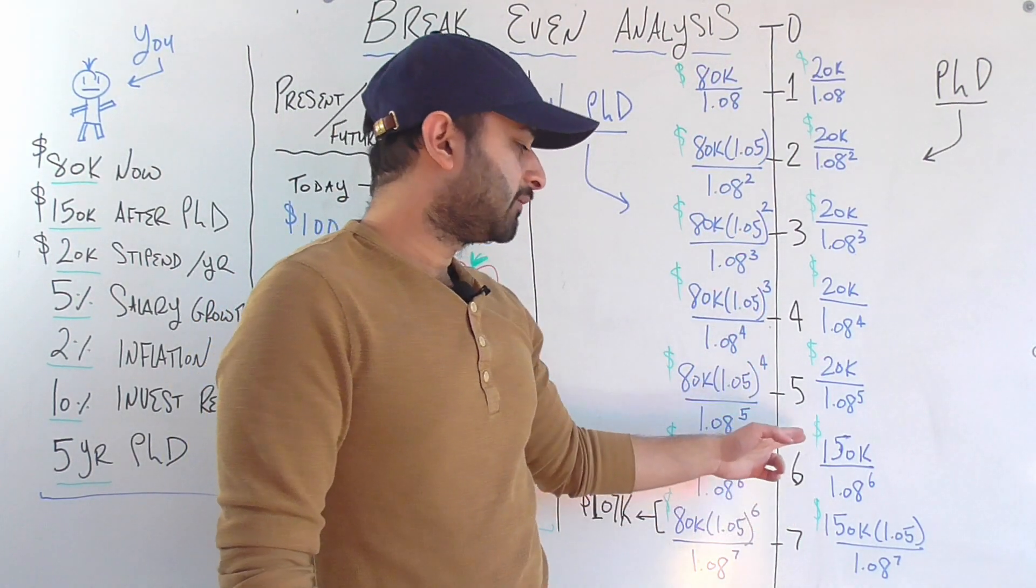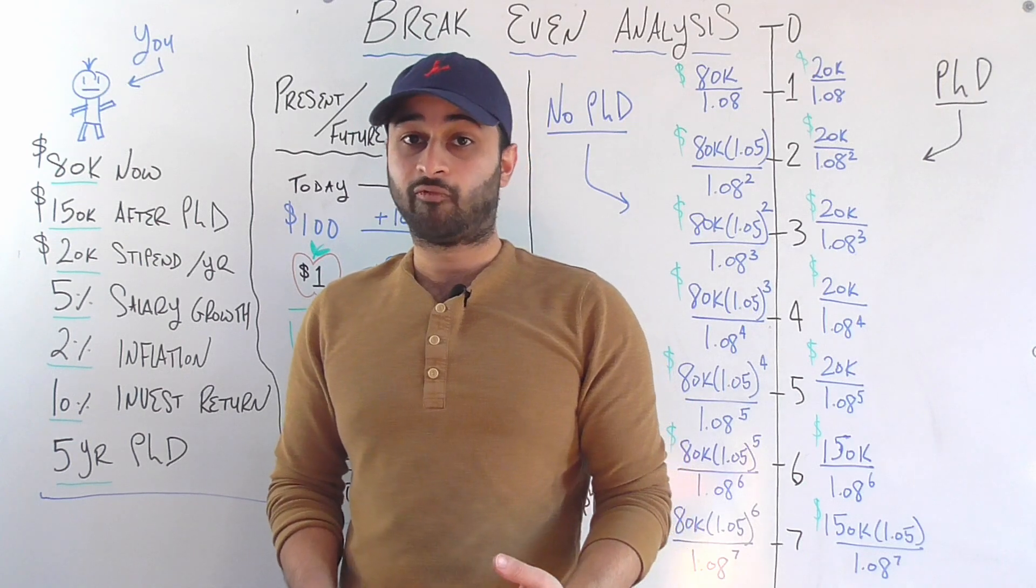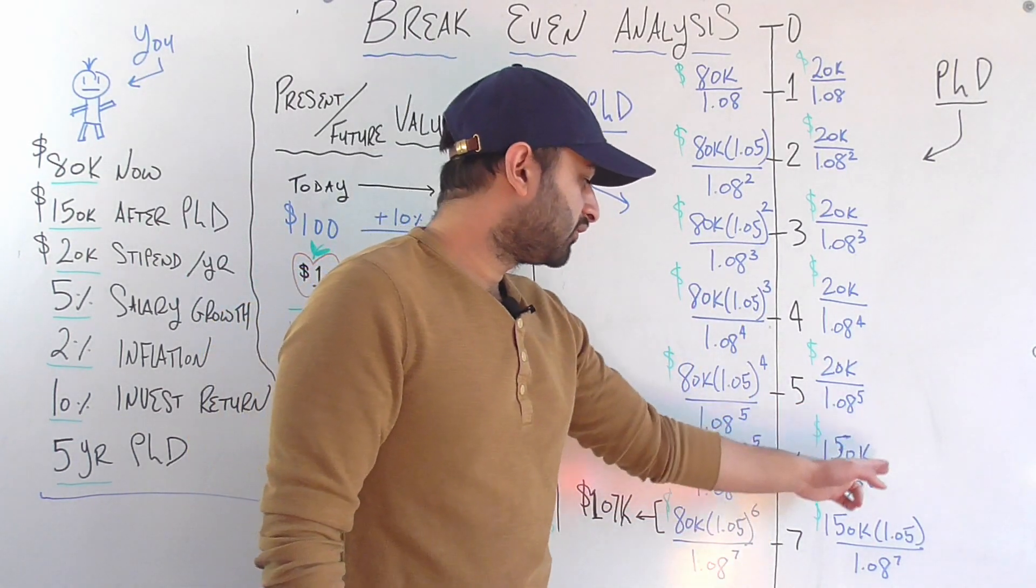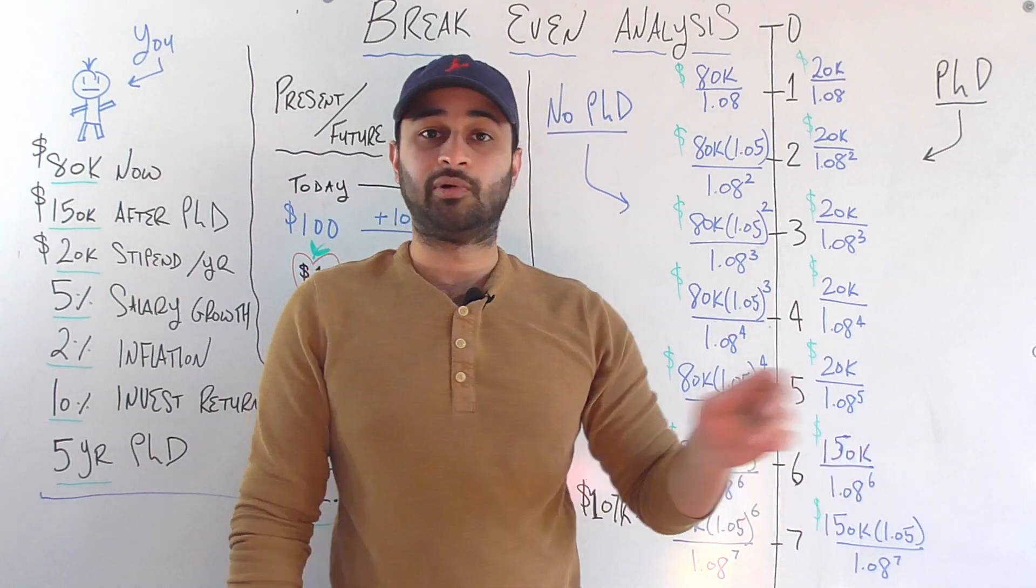And then at the sixth year, so that will be the end of the first year of working your higher salary job. You're going to be making $150,000 divided by 1.08 to the power of six.